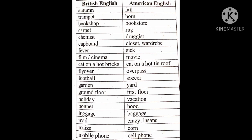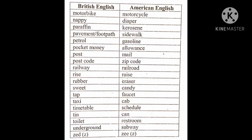Holiday — vacation. Bonnet of a car — hood. Luggage — baggage. Mad — crazy or insane. Mobile phone — cell phone. Motorbike — motorcycle. Nappy — diaper. Paraffin — kerosene. Pavement or footpath — sidewalk. Petrol — gasoline. Pocket money — allowance. They also say 'perks,' P-E-R-K-S.